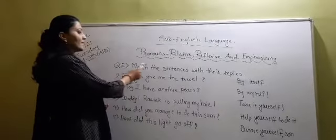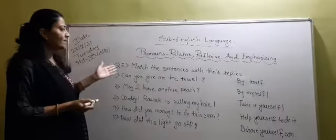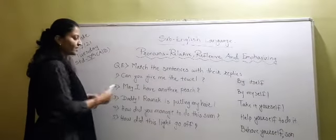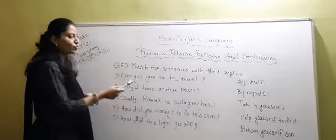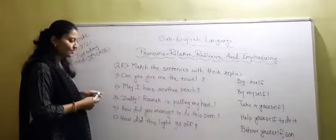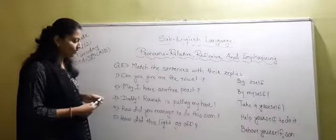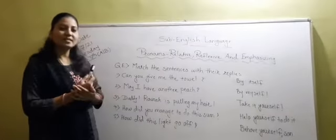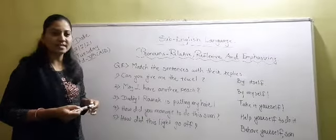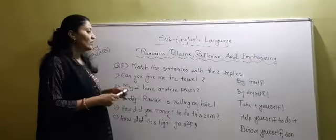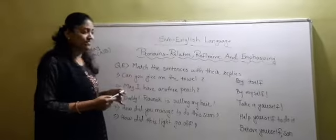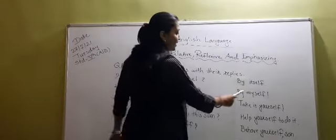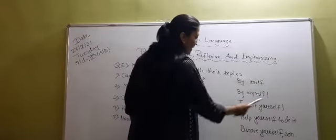Now see question number E — match the sentences with their replies using reflexive pronouns. The sentences are: Can you give me the towel? May I have another peach? Daddy, Ronak is pulling my hair. How did you manage to do this sum? How did this light go off? The replies on the other side are: by itself, by myself, take it yourself, help yourself to do it, behave yourself son.